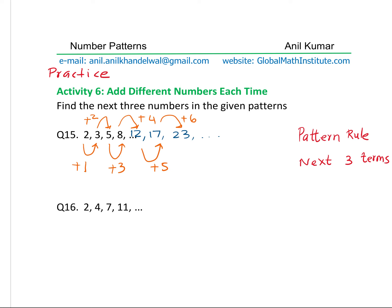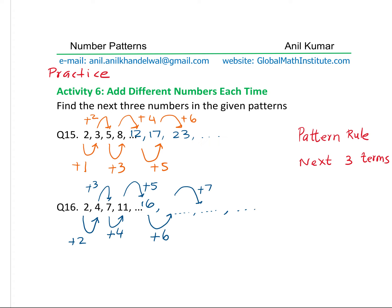Let's practice another one. From 2 to 4 we are adding 2, then adding 3 to get 7. Then 7 plus 4 is 11, then add 5 to get 16, then add 6, then add 7. So you get one number, then the other, and that's the end of your series with 3 numbers to provide — and the series continues.